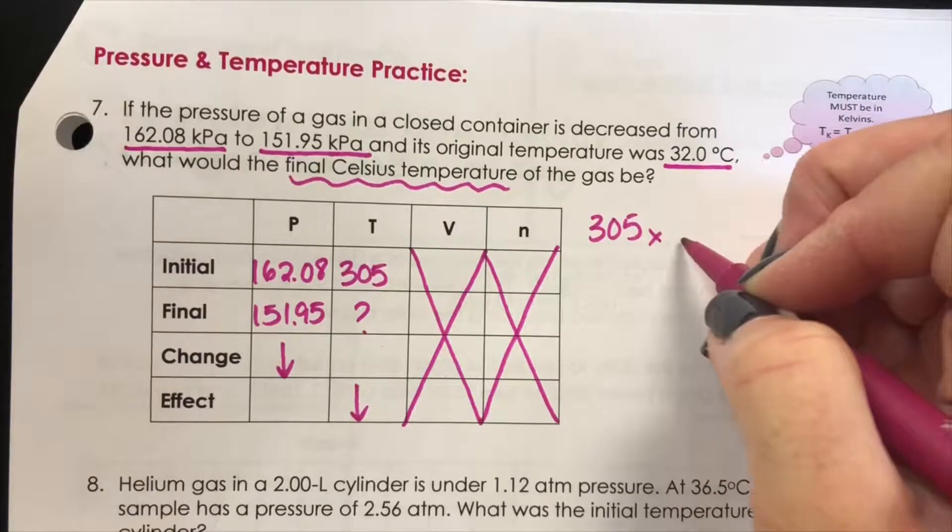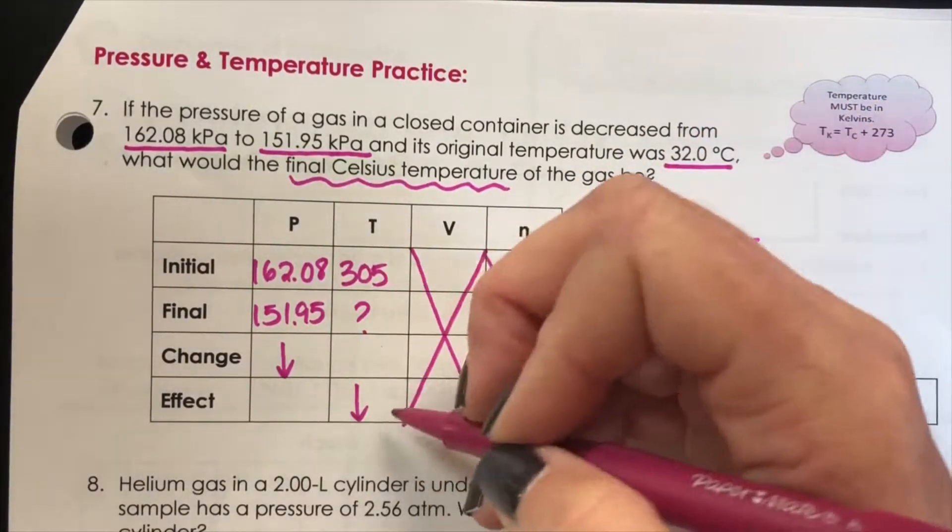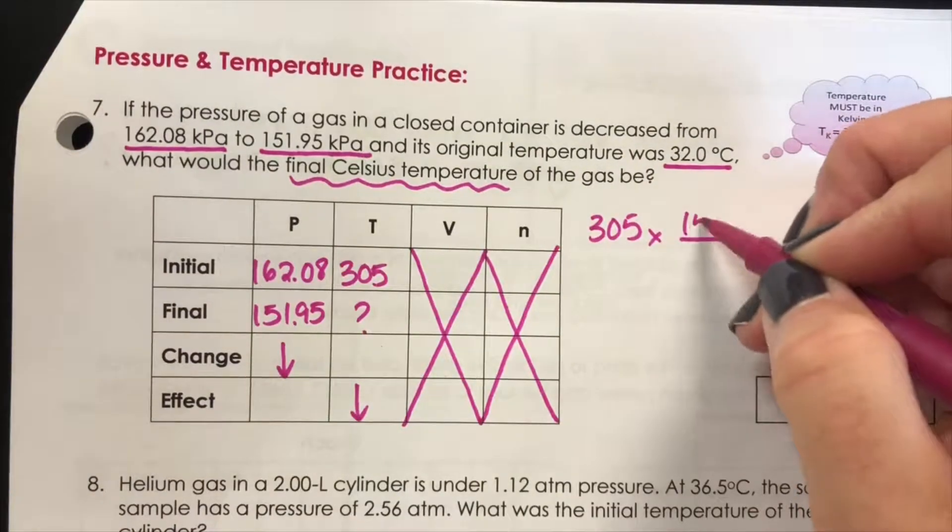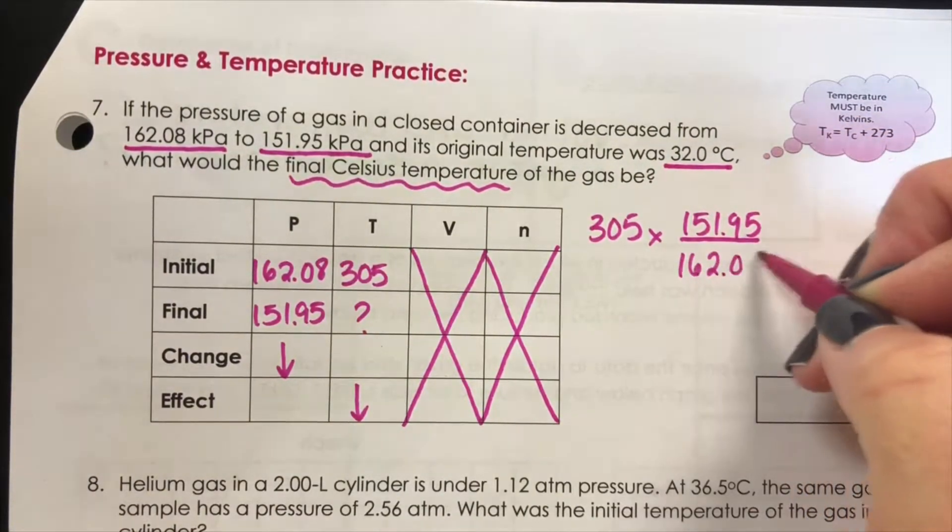So we start with the 305 which is our temperature and since we want a smaller temperature we need to put the smaller pressure value on the top of our proportion and the larger on the bottom.